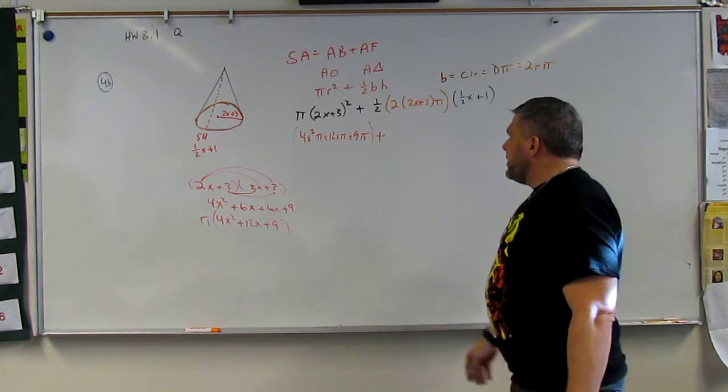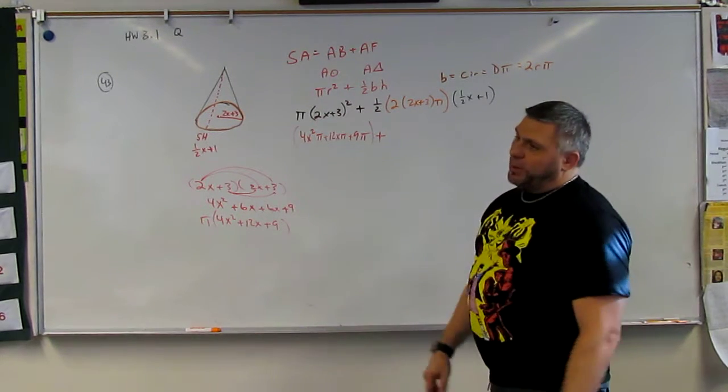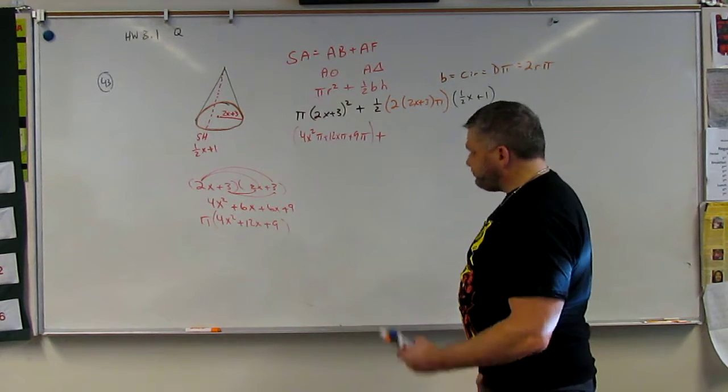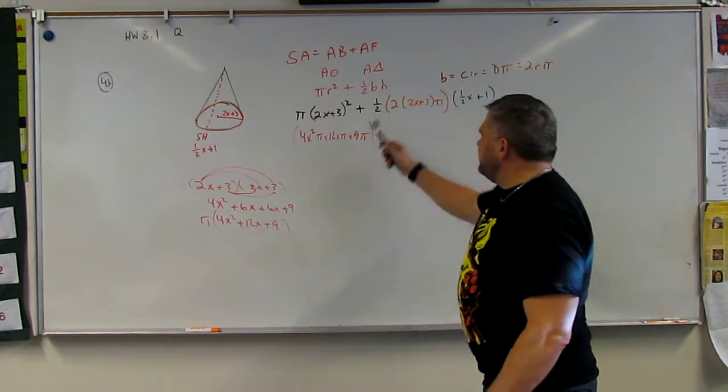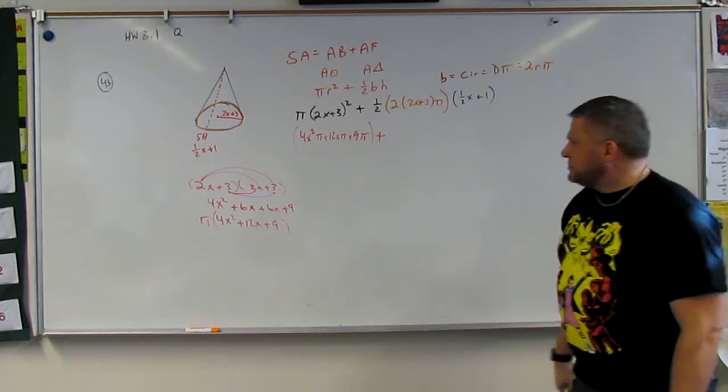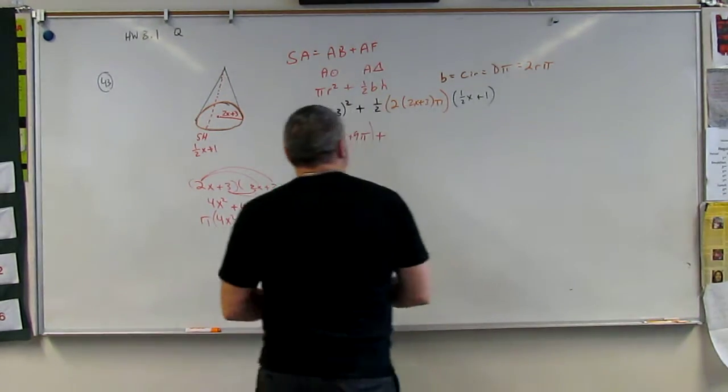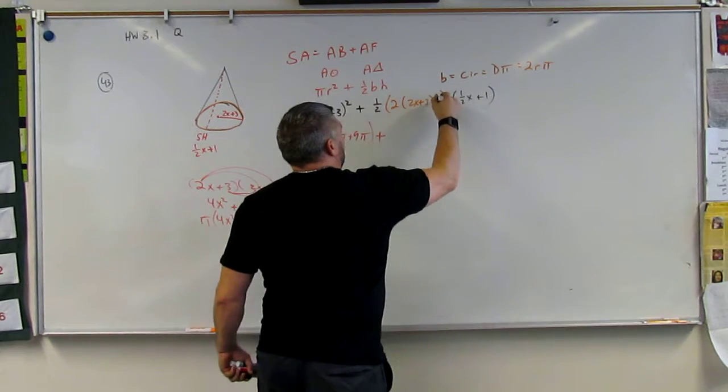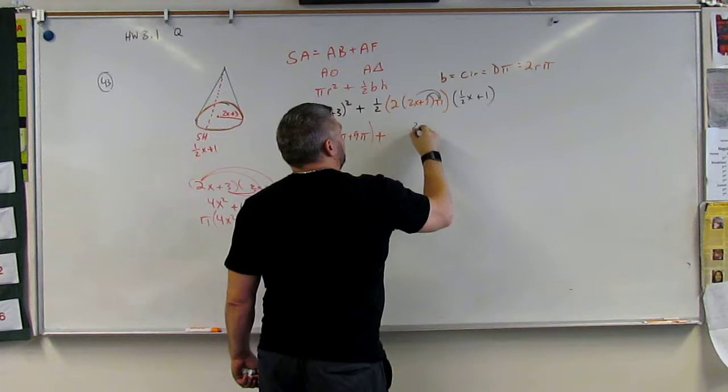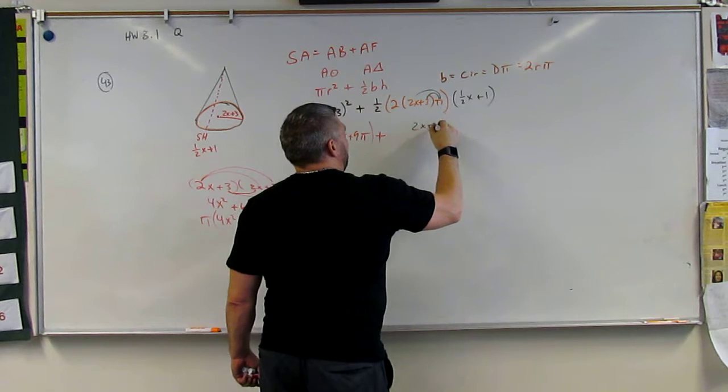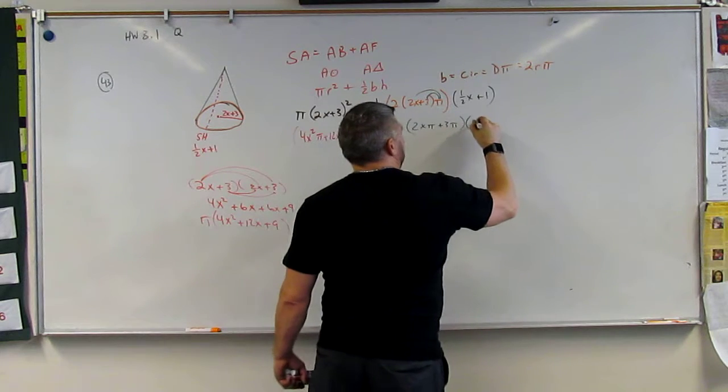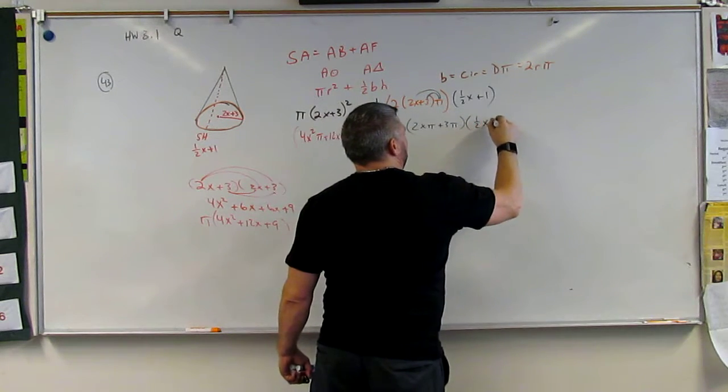All right. We still got some stuff to do. What's half of 2? 1. Well, that's not bad. Then it's just, what's pi times this and this? Well, that would be 2x pi plus 3 pi, times 1 half x plus 1. Does that make sense?